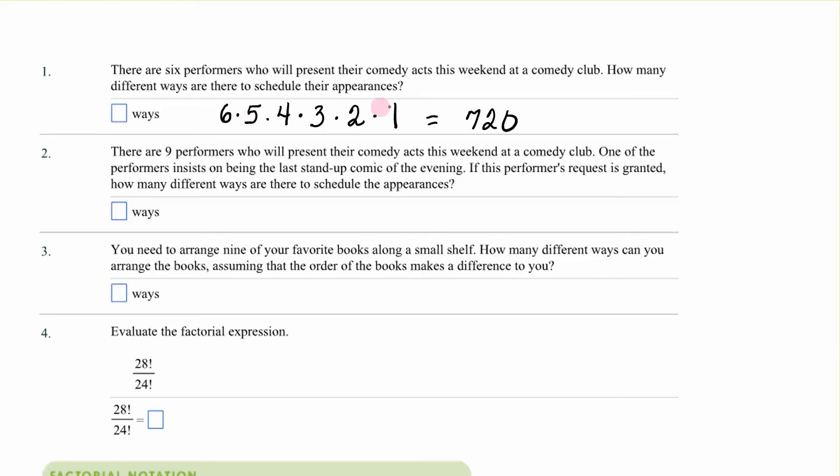Now, there's something kind of interesting about this. Each performer was only going to perform once. The order did matter. This is called a permutation.